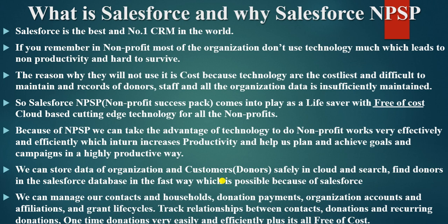We can manage contacts and households. Household means members of the same family, while Organization accounts are used for companies like preferred partner donors. We can track donation payments, organize accounts, track relationships between contacts, and do many more things — all in Salesforce NPSP at zero cost. It's a really nice initiative by Salesforce, and NPSP is a great initiative.